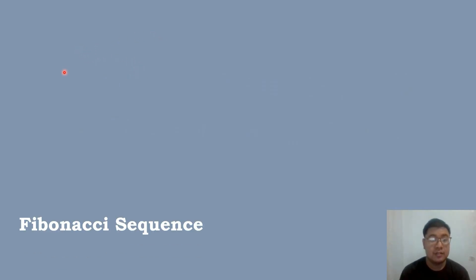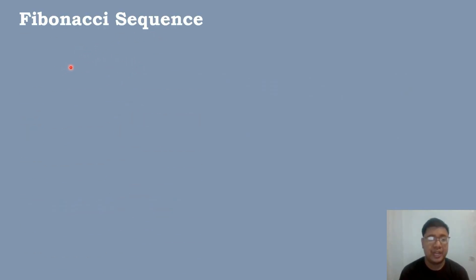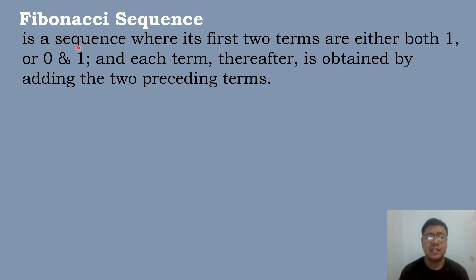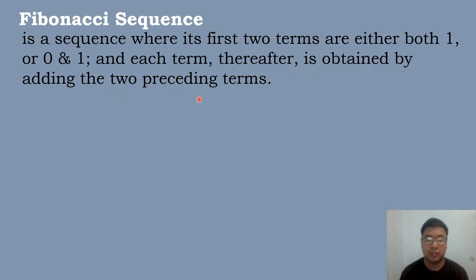Let us define first what is Fibonacci Sequence. When we say Fibonacci Sequence, it is a sequence where its first two terms are either both 1, or 0 and 1, and each term thereafter is obtained by adding the two preceding terms.